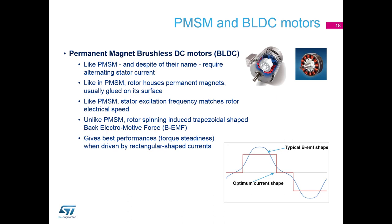The permanent magnet brushless motors, called in short BLDC, are like PMSM in many factors. They require alternating stator current. Like PMSM motors, the rotor houses permanent magnets, typically glued on the surface of the rotor. And like PMSM, their stator excitation frequency must be synchronous with the rotor mechanical speed. Unlike Permanent Magnet Synchronous motors, the rotor that spins within the stator inducts a trapezoid-shaped back electromotive force. And this motor gives the best performance when driven by rectangular shape currents.